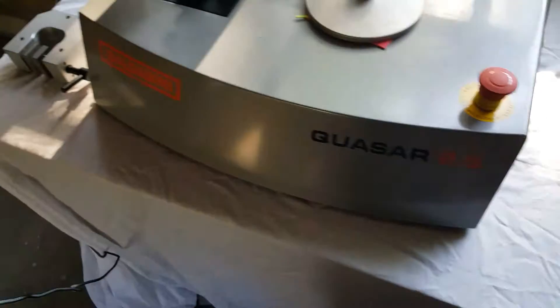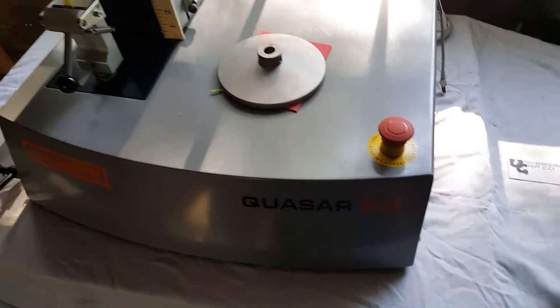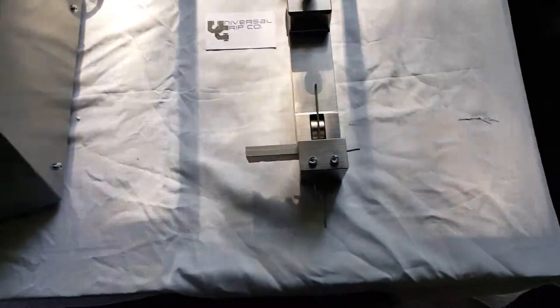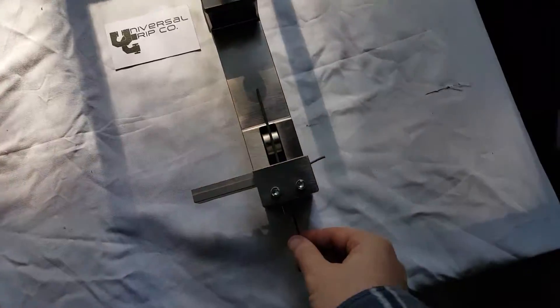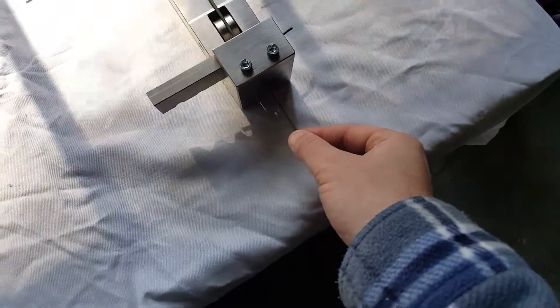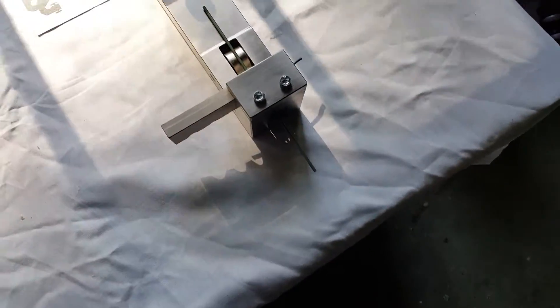I have a Galdabini universal testing machine right here ready to go. The only other thing I would recommend on this is probably some wedge grips with V inserts to pull that cylindrical rod-like sample from the bottom there.